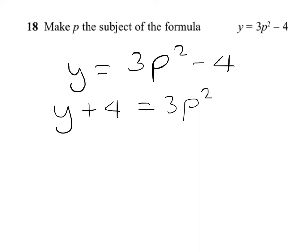So now we want to get rid of the 3 that's near the p. So 3 is multiplying p squared, so it goes to the other side as a divider. So y plus 4 all over 3 equals p squared.